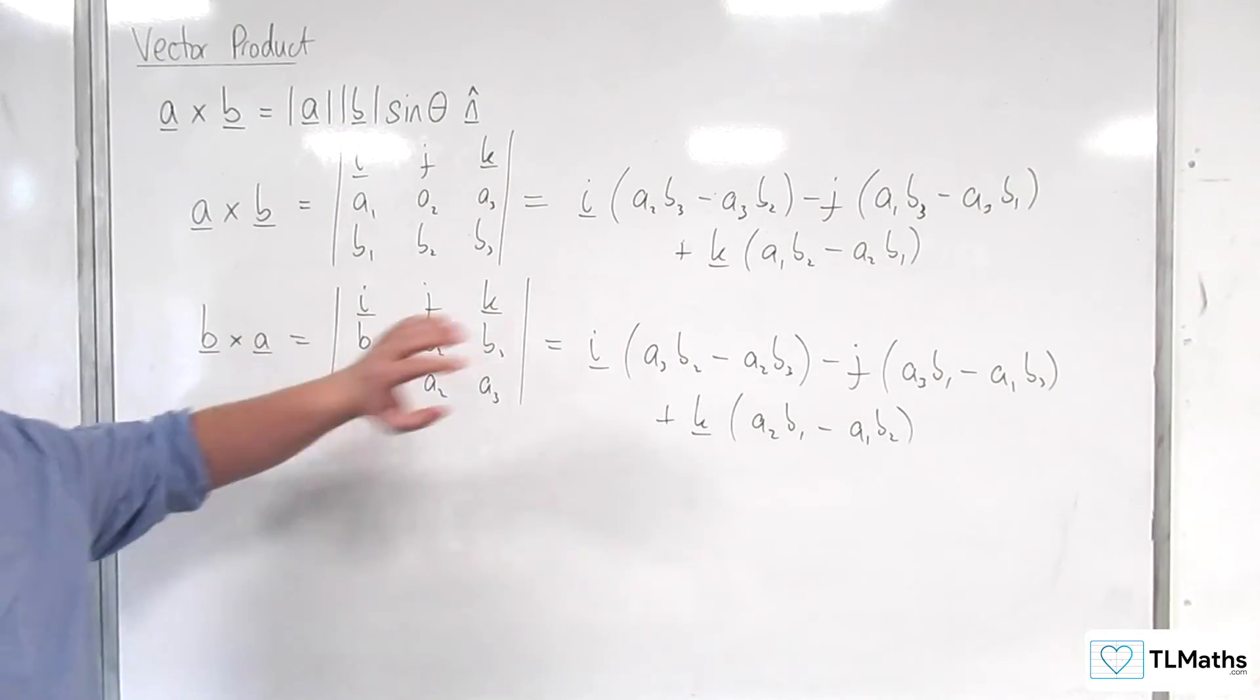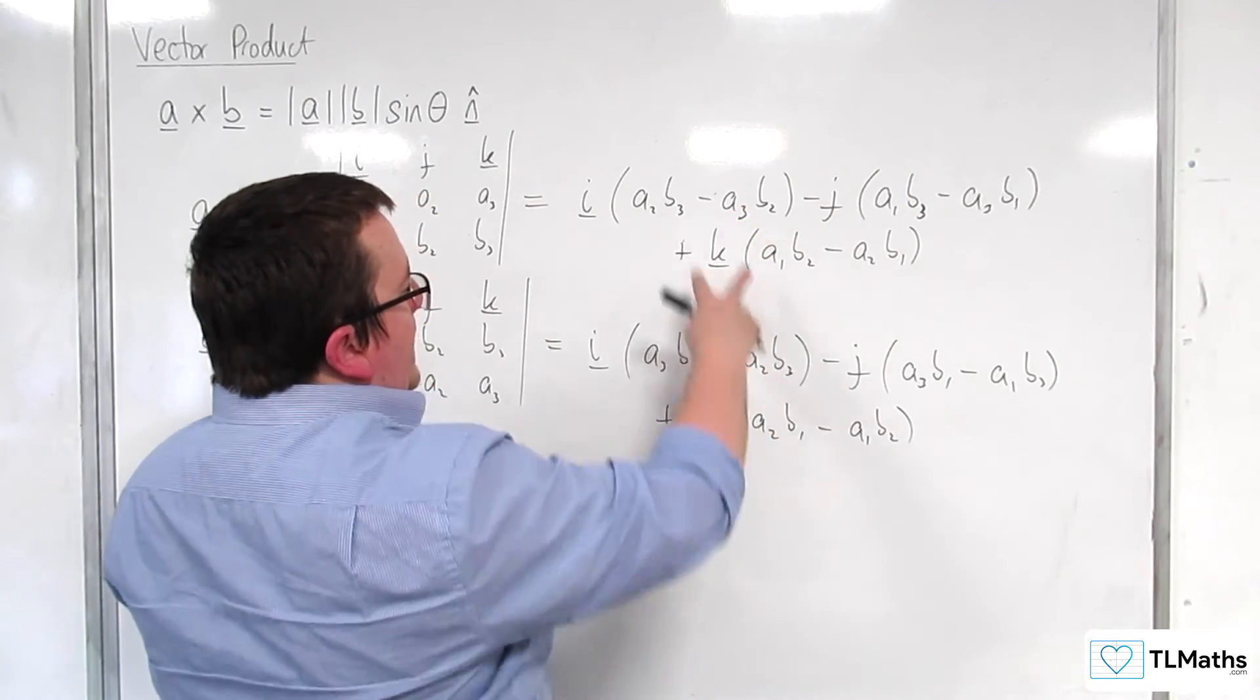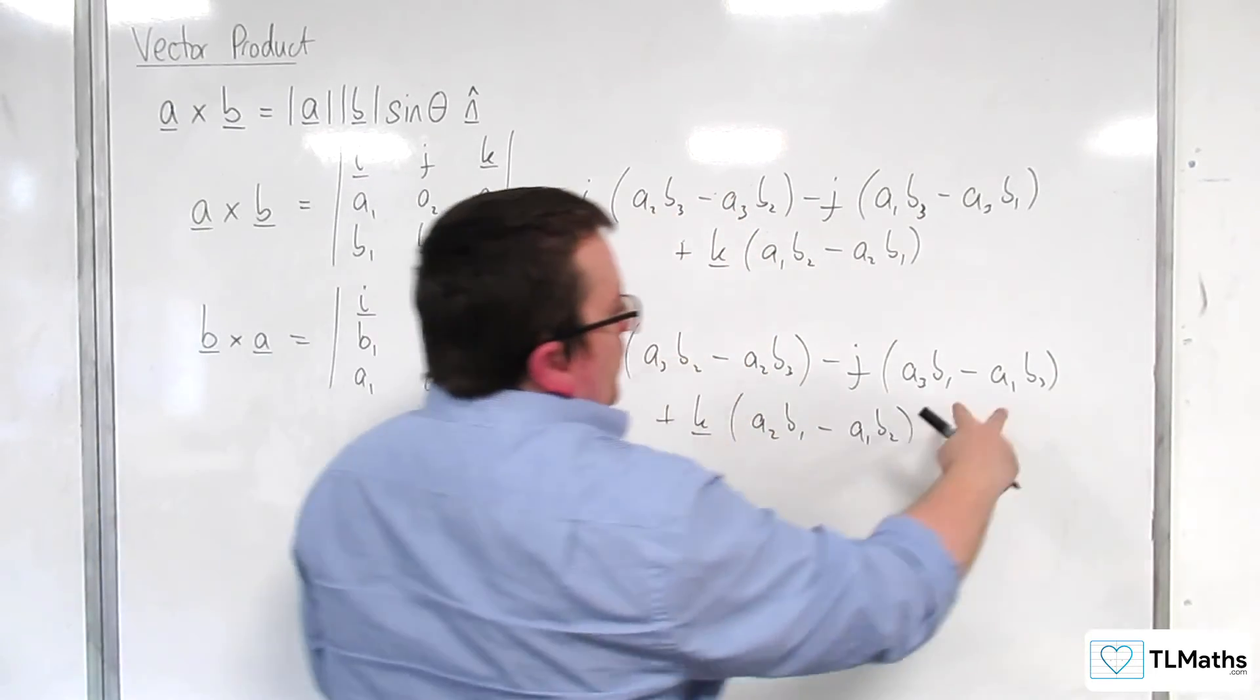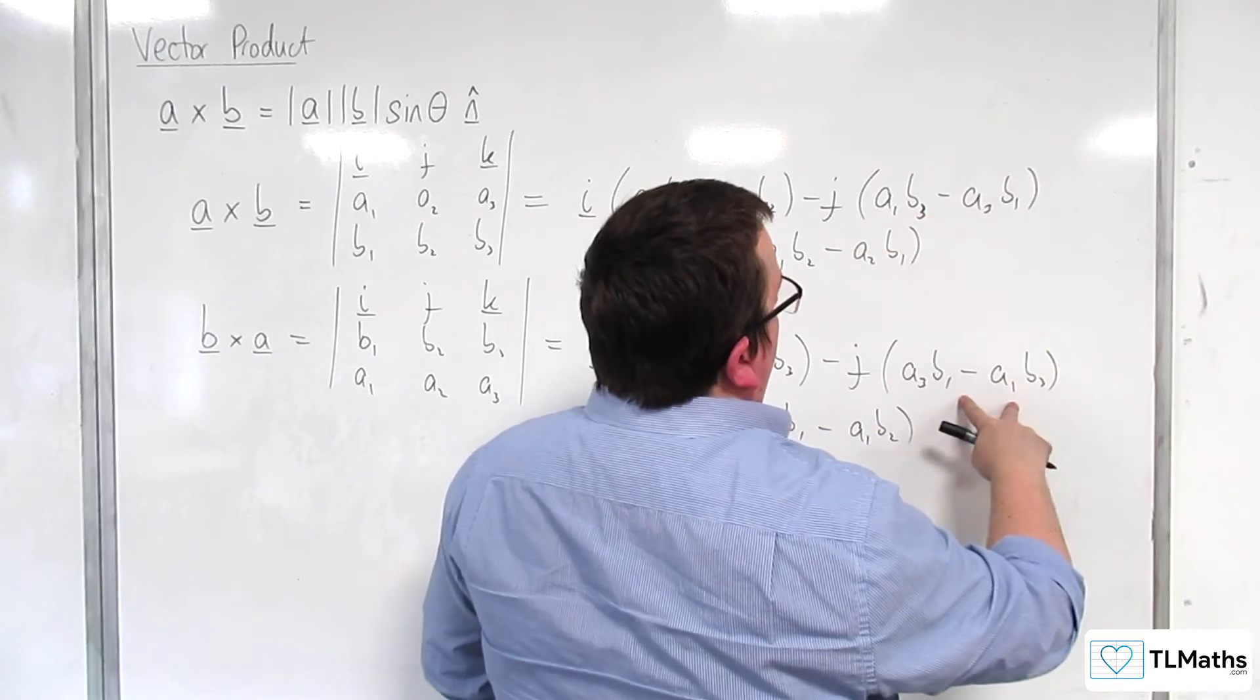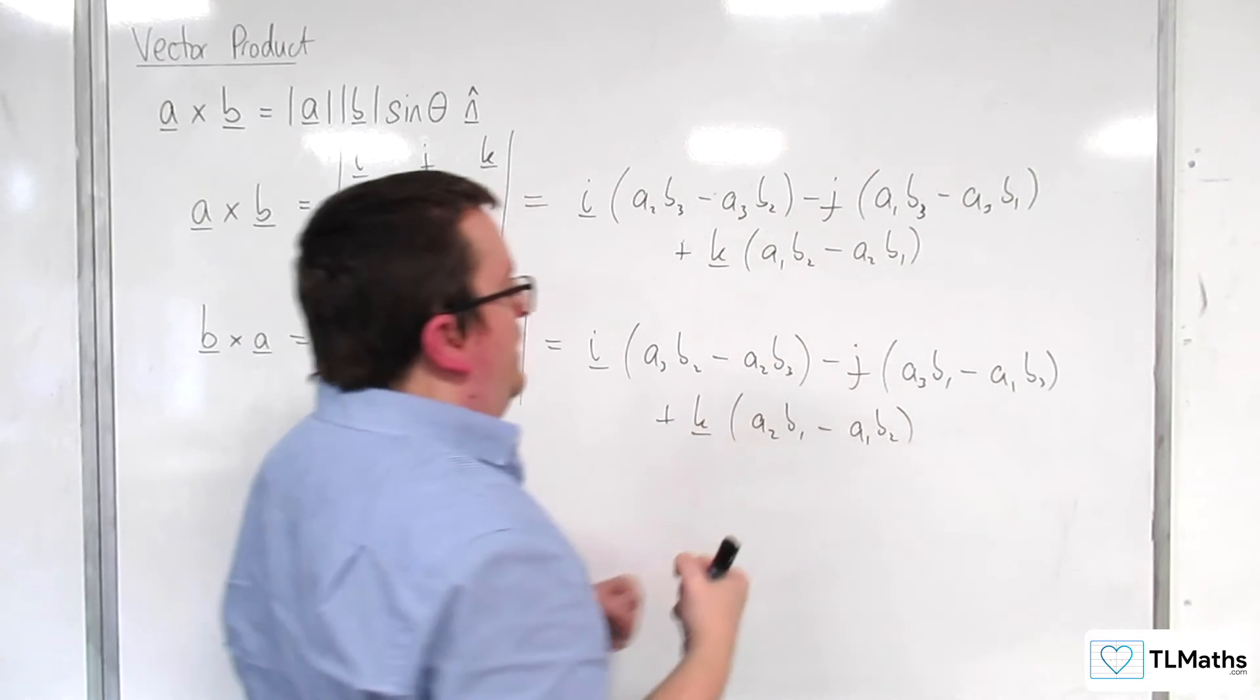So if we compare these two, what you can see is that we've got the negative of that one, we've got the negative of that one, and we've got the negative of that one, so it's just around the other way.